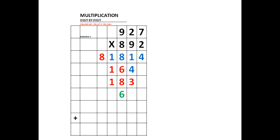Now we're going to do 8 times 927. 8 is in the 100's column, so when we do 8 times 7, which is 56, we will start in the 100's column. There's the 5 with the 56. 8 times 2 is 16 — there's the 6, and there's the 1 in the next column to the 6, up as high as it could go. Then we see the 2 from 8 times 9 is 72. There's the 7 in the column to the left of 2, and it went up as high as it could go.